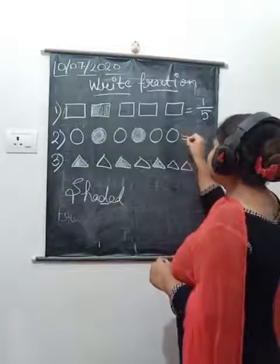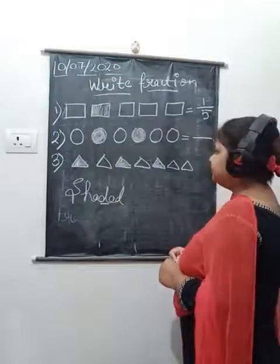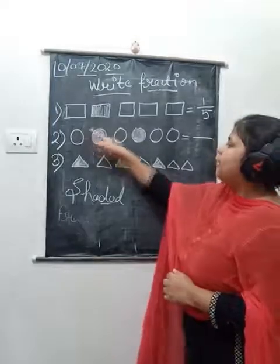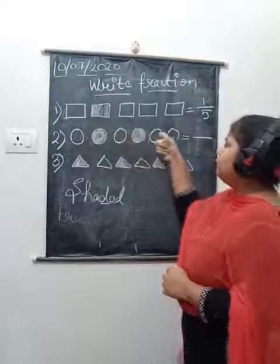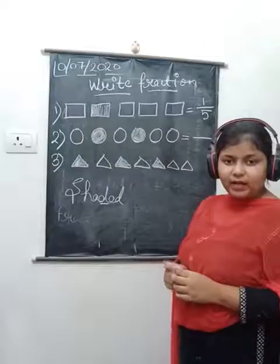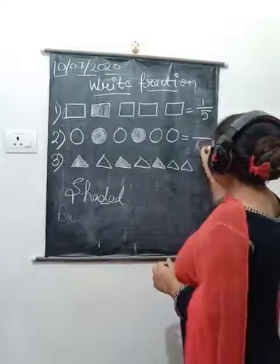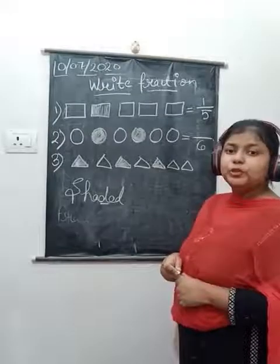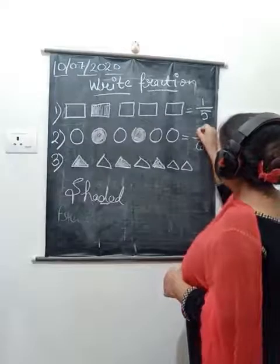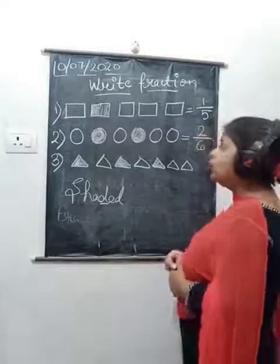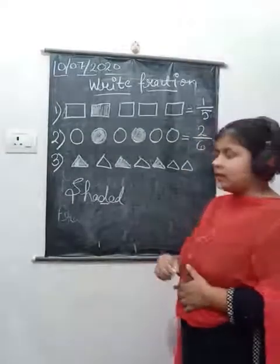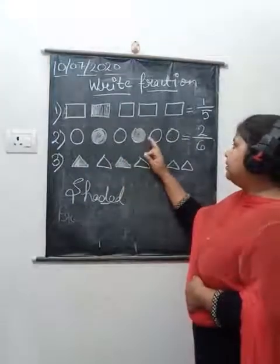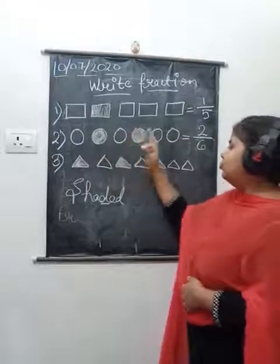In the second question, first we write the denominator. Count the total parts: six. And the shaded part is two. So the fraction of the shaded part is two upon six.